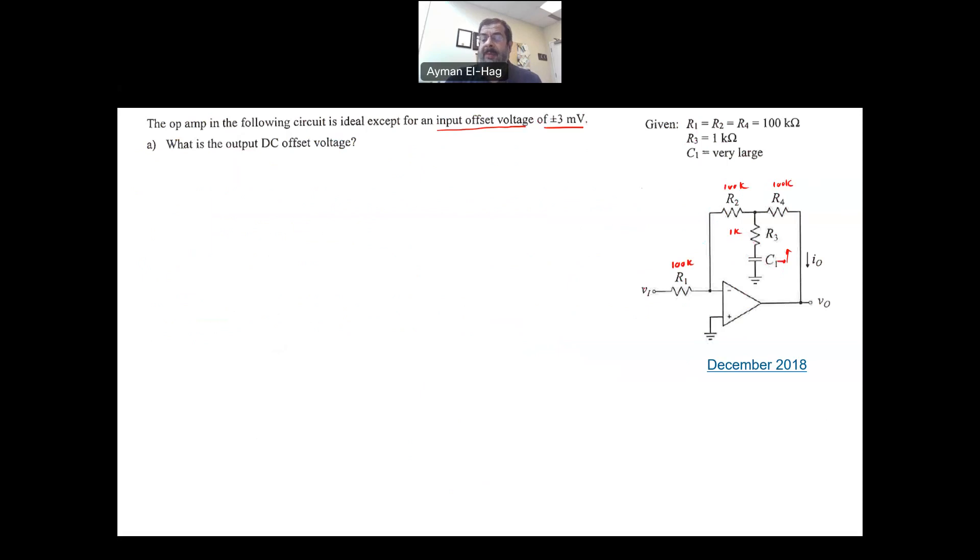Now, here we have an input. But the question here is asking you, what is the output DC offset voltage? What is the output? Not because of the input, but because of the DC offset. Now, when you are asked like that, you come and you ground your input. And then you will apply here your offset voltage, VOS, which is equal to plus-minus three millivolt. So, if this is the offset here at the positive terminal, then this will be also the offset. And now, this is a DC analysis.